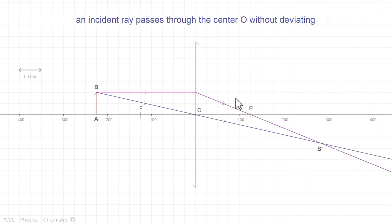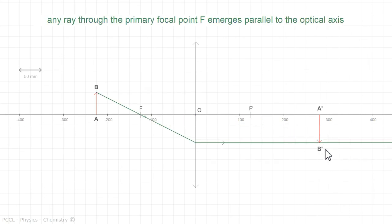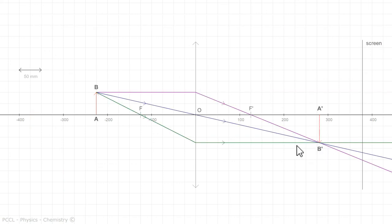A single ray is not enough to get a point. I need a second ray. The one passing through the center keeps its direction. So I can get B prime from this and already represent the image A prime B prime. To reassure myself, I can represent the ray which passes through the focal point F. It comes out parallel to the principal axis and I check that it also passes through B prime. So that I can build my image here.